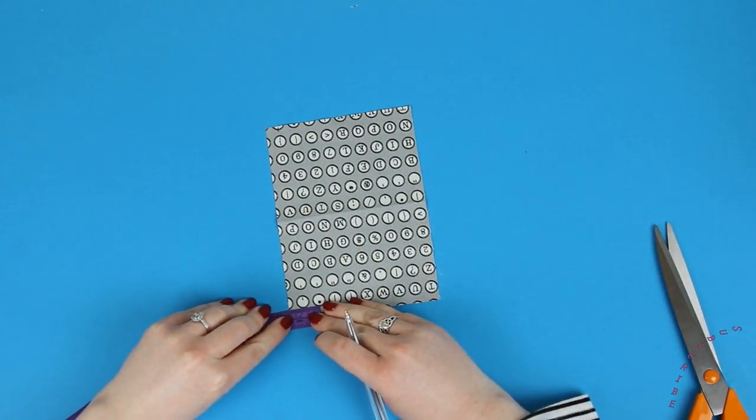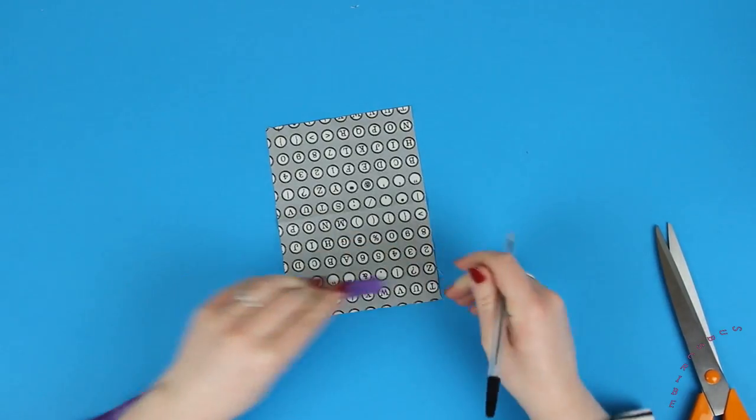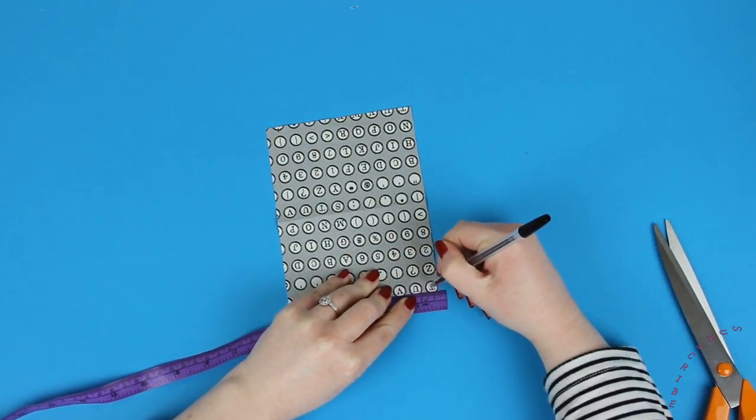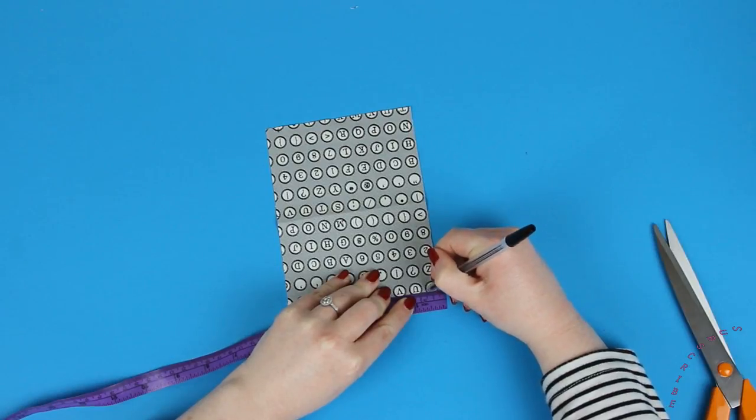Okay, so at the top of the fabric you're going to need to mark in where your zip will start and finish. So I measured in by one centimeter on both ends of the fabric.